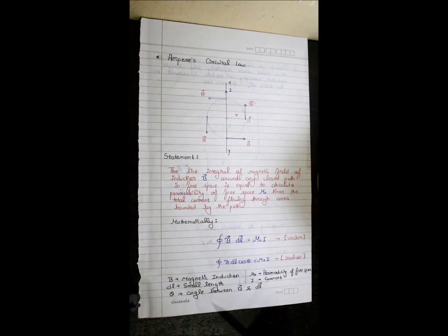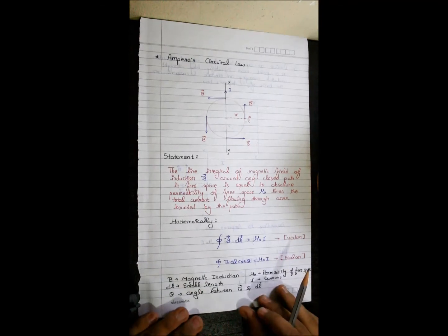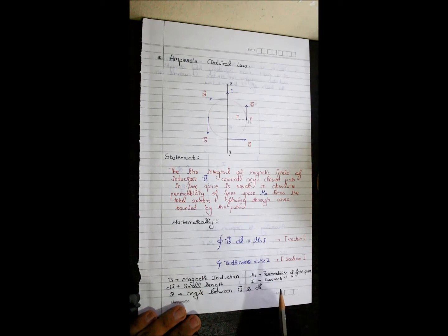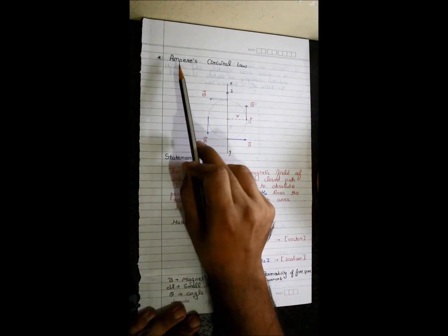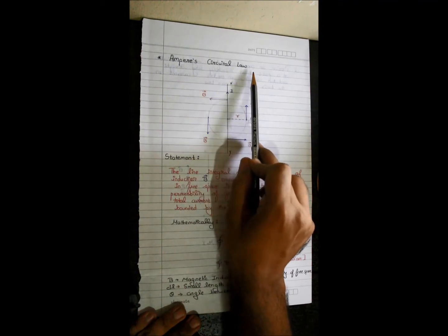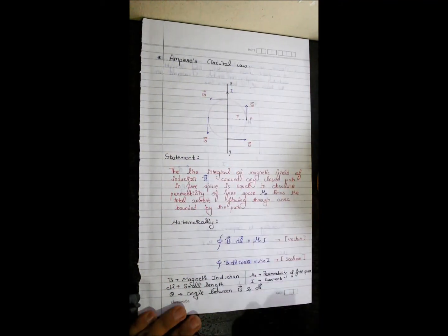Hello everyone. Today we are going to learn about a chapter that is magnetic effect of electric current. This is like a quick revision for you before your board exams. Let us start with the first part — Ampere's circuital law.